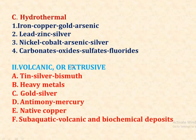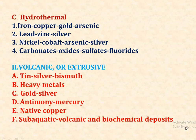The third category is hydrothermal, in which iron, copper, gold, arsenic, lead, zinc, silver, nickel, cobalt, and carbonate oxides, sulphates, and fluorides are deposited. The second main category is volcanic or extrusive, in which mainly tin, silver, bismuth, heavy metals, gold, antimony, mercury, native copper, and deposits from subsequent subaquatic volcanic and biochemical processes occur.